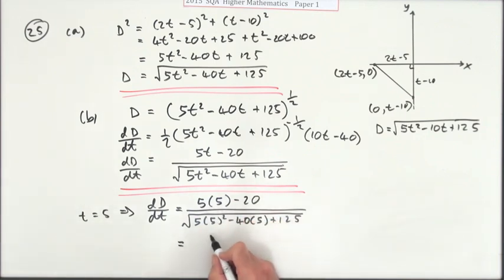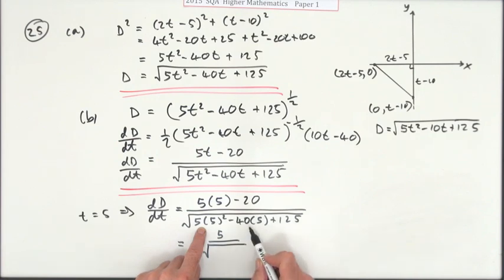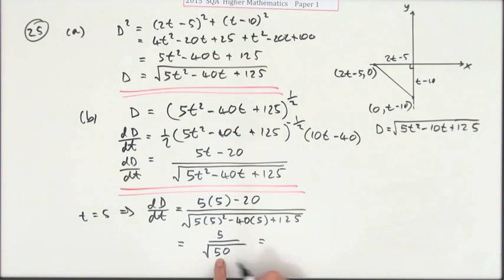25 minus 20 is 5 over the square root of this. Could be a nasty bundle that I've got down here: 25, 125, 250 minus 200 is 50, and there's a 25 times 2, so that's 5 root 2. So you've got 5 over 5 root 2, which is 1 over root 2.